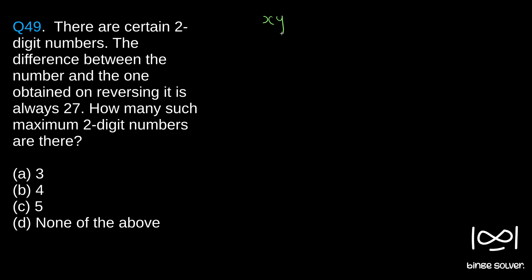We represent the two-digit number as xy, where x is the tens place and y is the units place. So the number is 10x + y, and on reversing we get 10y + x. It is given that the difference between the number and the one obtained on reversing it is always 27.